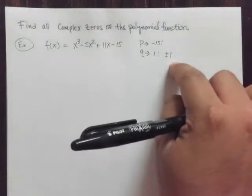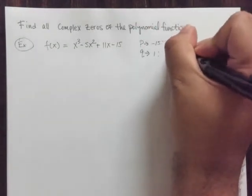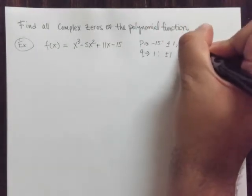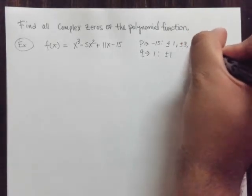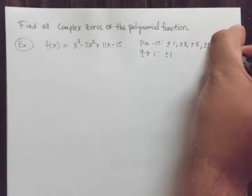The factors of 1 are only 1 and negative 1. And this one right here, factors of 15 are 1, 3, 5, and, of course, 15.